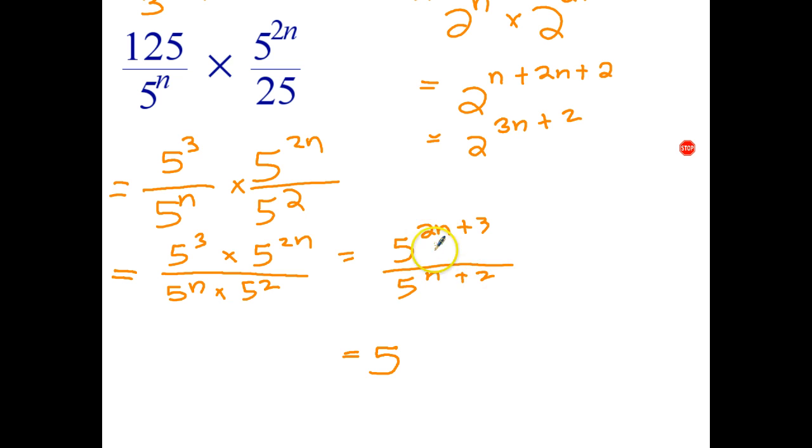Well let's subtract like terms. 2n minus n is n, plus 3 minus 2 is 1. And there's the final answer.